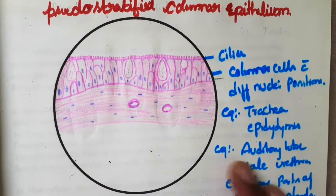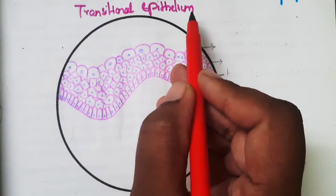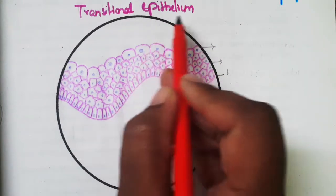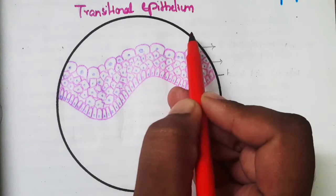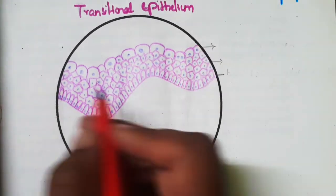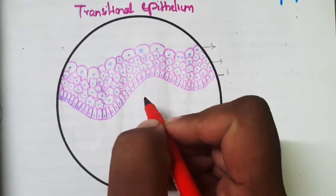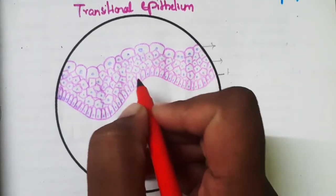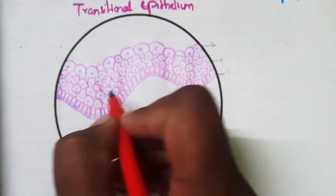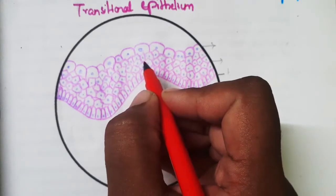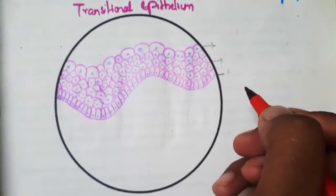Next is the transitional epithelium, also called urothelium. This epithelium mainly lines hollow organs. Its chief characteristic is that the shape of the cells varies depending upon the contraction and relaxation of the muscle.